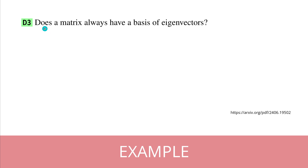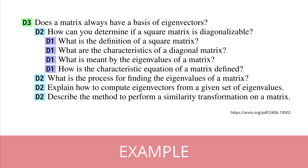Here's an easy example. We have a D3 question for our AI: does a matrix always have a basis of eigenvectors? How would you deconstruct this into a set of simpler questions, deciding how many D2s and D1s you would need? They found those are the complexity levels an LLM has to tackle before it really understands what D3 means.